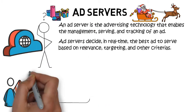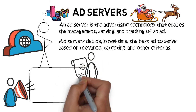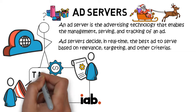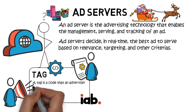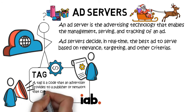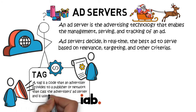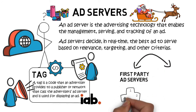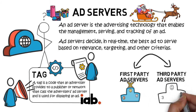In a typical ad buying scenario from the buy side, advertisers will create tags for each of the creatives in their ad servers and provide them to publishers. According to IAB, a tag is a code that an advertiser provides to a publisher or network that calls the advertiser's ad server and is used for displaying an ad.